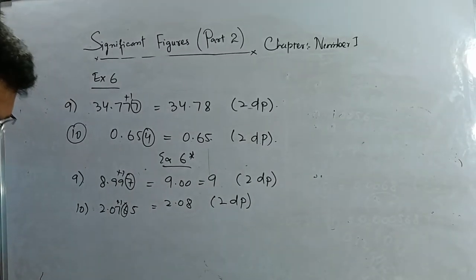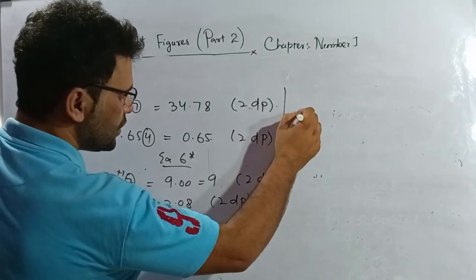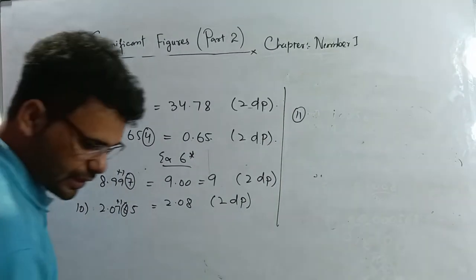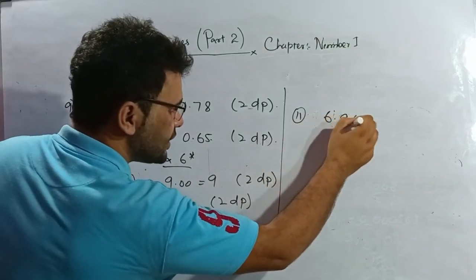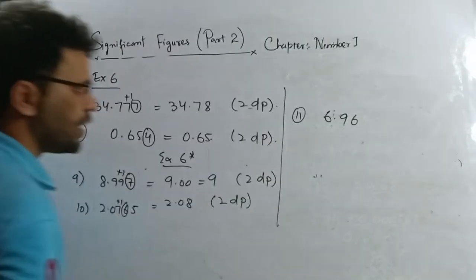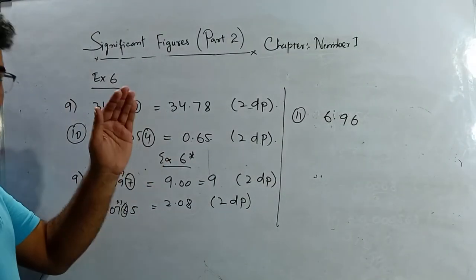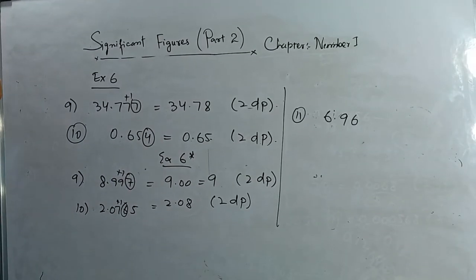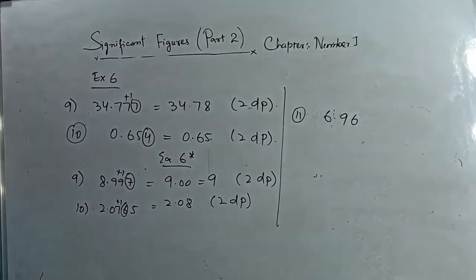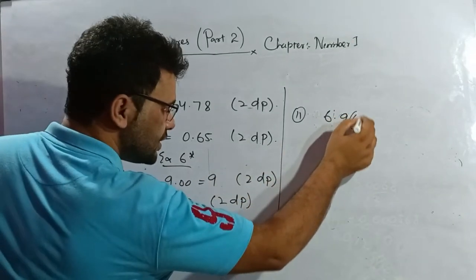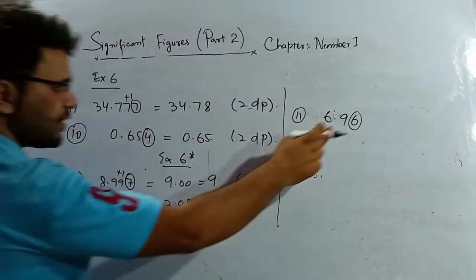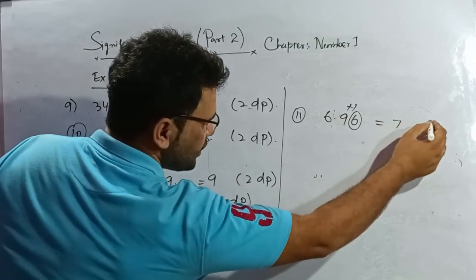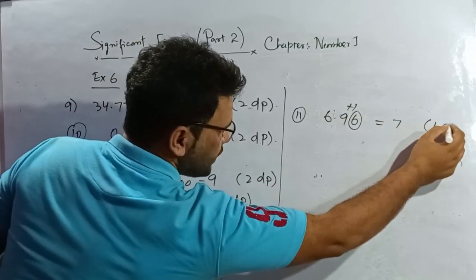The eleventh question from exercise 6 star: 6.96, write this number up to one decimal place. I see the second decimal place — it is 6, which is greater than five. So I add one here. The answer is 7.0, one decimal place.